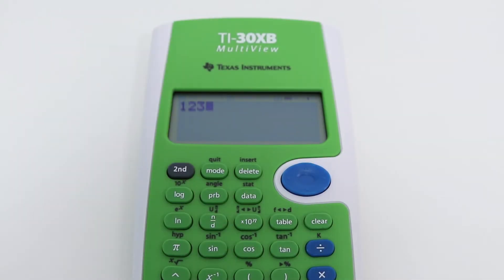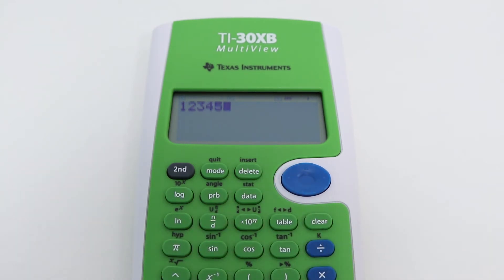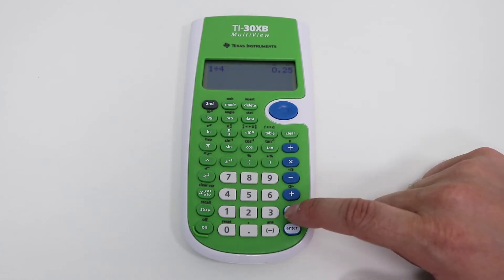It features a scroll and edit key similar to graphing calculators which allows you to edit data within a line, as well as a toggle key which makes converting square roots, fractions and pi to decimals and back again.